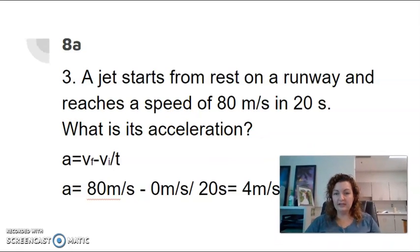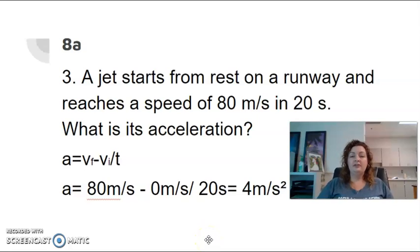Last one is number three. It says a jet starts from rest on a runway and reaches a speed of 80 meters per second in 20 seconds. What is its acceleration? Well, you first have to know the formula for acceleration. So I wrote it here for you. A is for acceleration equals final velocity minus initial velocity divided by time. So this little F next to the V stands for final or where it ends. And the little I stands for initial or where it starts. So if I'm reading through this, I need to get all of my components. The easiest one is seconds. Seconds is time. That's easy. So we can substitute T for our 20 seconds.